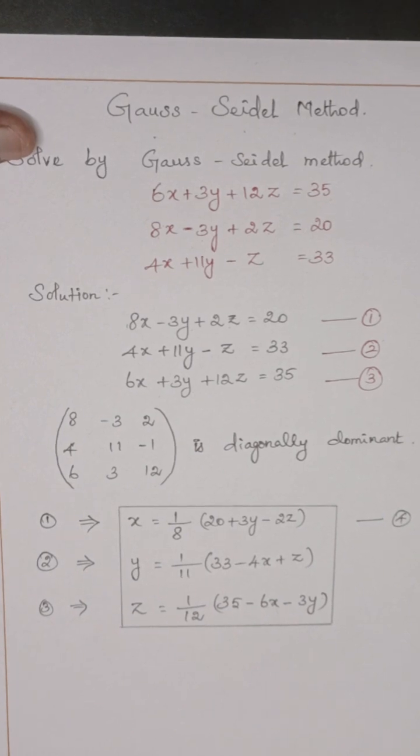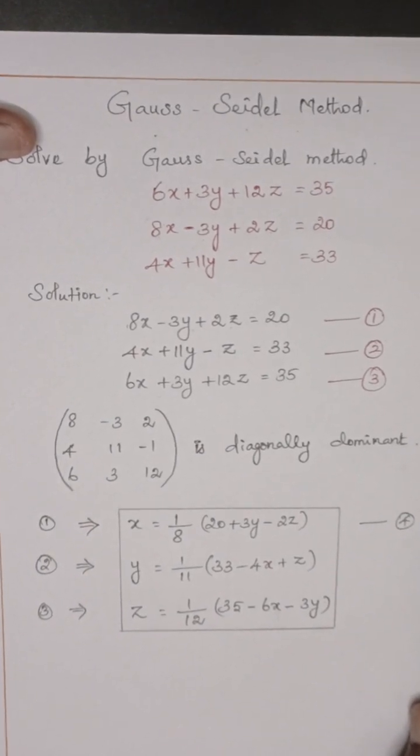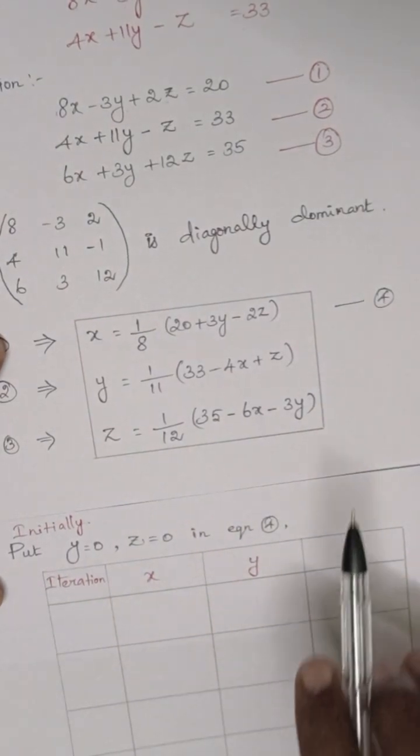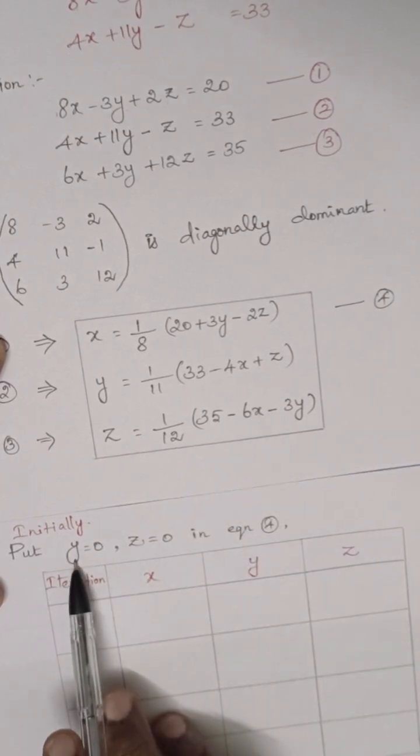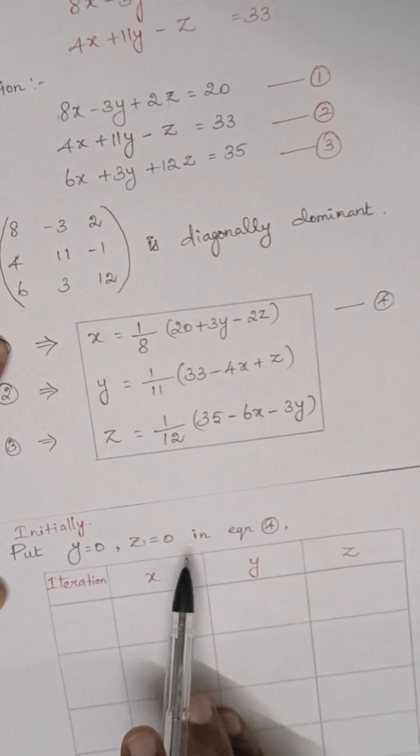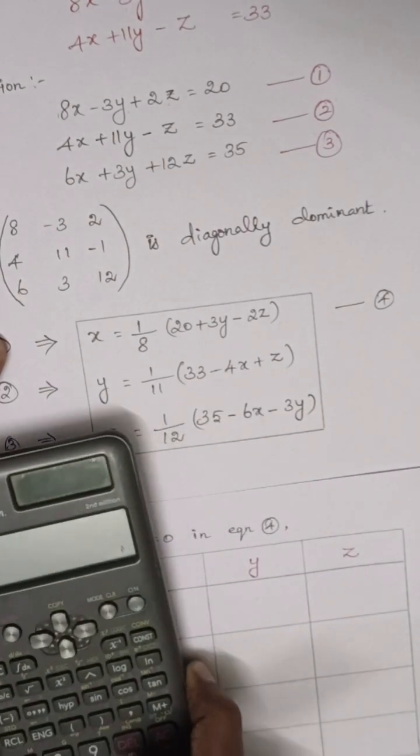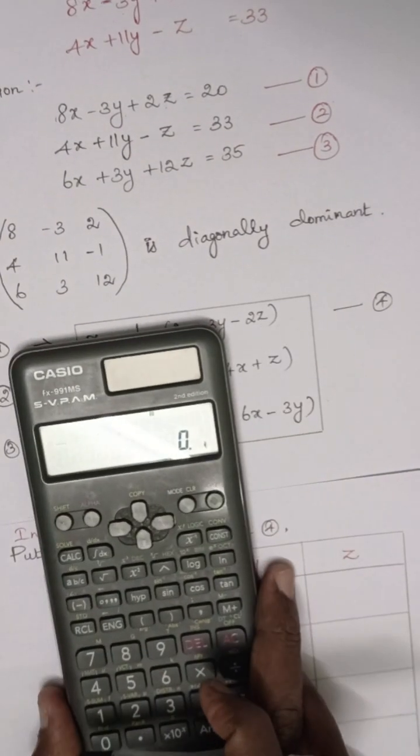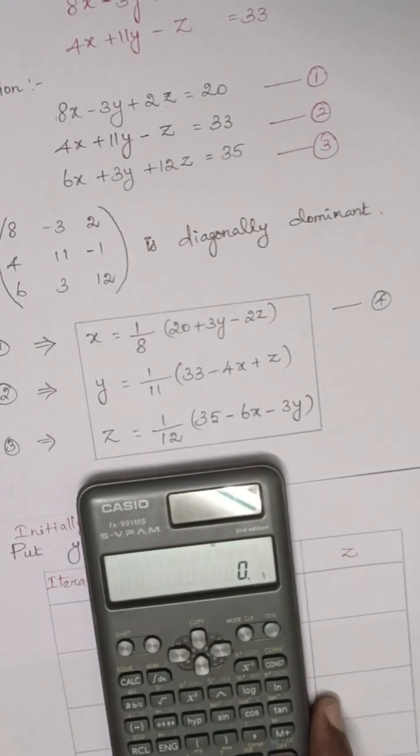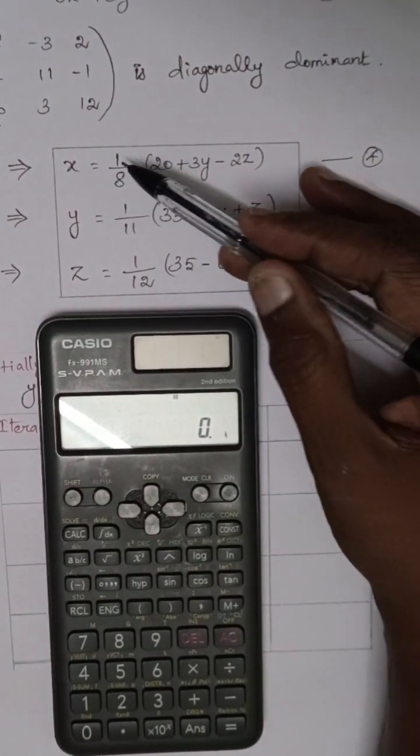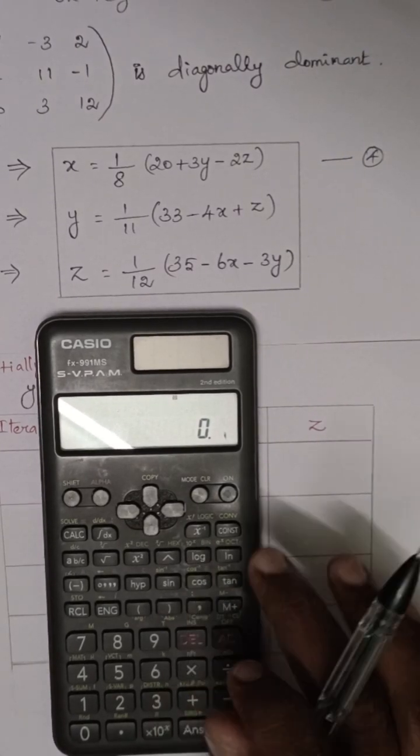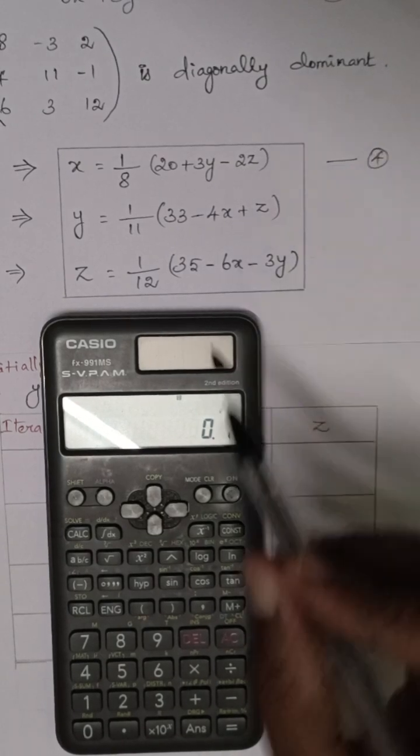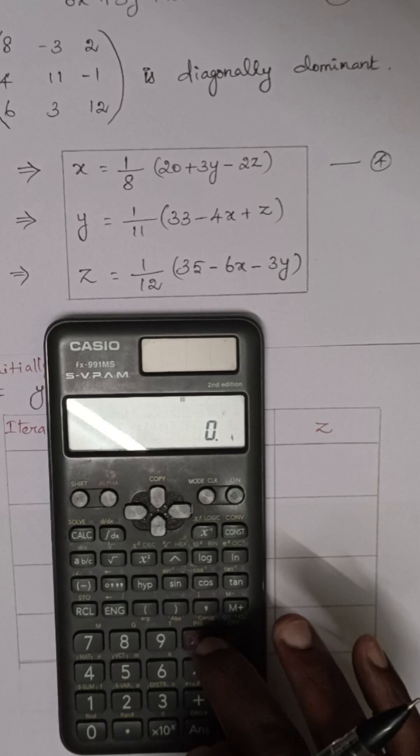Now we are going to see using calculator. So instead of x, y, z, I will take a, b, c. Because in this calculator, z is not there. So we take as a, b, c.